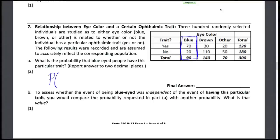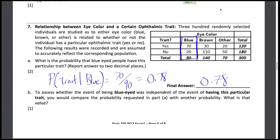So this is the probability of trait given blue eyes. And this is simply the number of people, blue eyed people that have the trait, divided by the total number of blue eyed people, 90 divided by 115, or approximately 0.78.